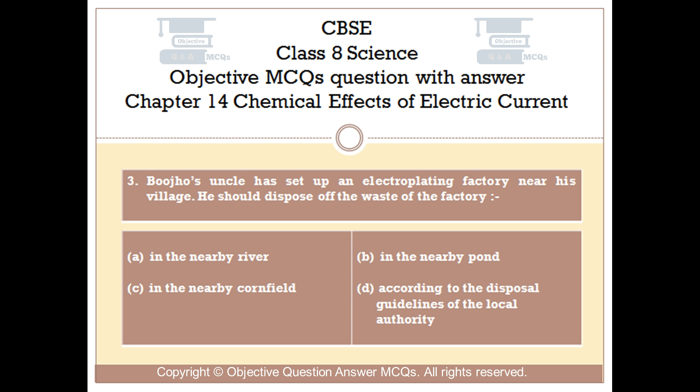Question number 3. Buiho's uncle has set up an electroplating factory near his village. He should dispose of the waste of the factory: Option A in the nearby river, Option B in the nearby pond, Option C in the nearby cornfield, Option D according to the disposal guidelines of the local authority.